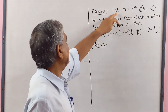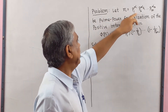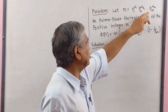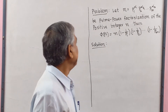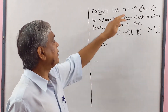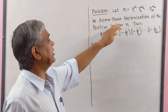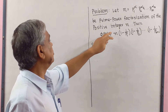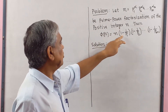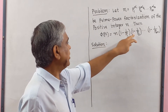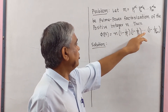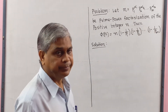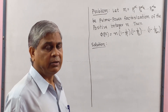The problem is: let N equal to P1 to the power alpha1, multiply P2 to the power alpha2, multiply dot dot dot Pm to the power alpha m, be the prime power factorization of the positive integer n. Then phi(n) equal to n multiply (1 minus 1/P1) multiply (1 minus 1/P2) multiply dot dot dot multiply (1 minus 1/Pm).